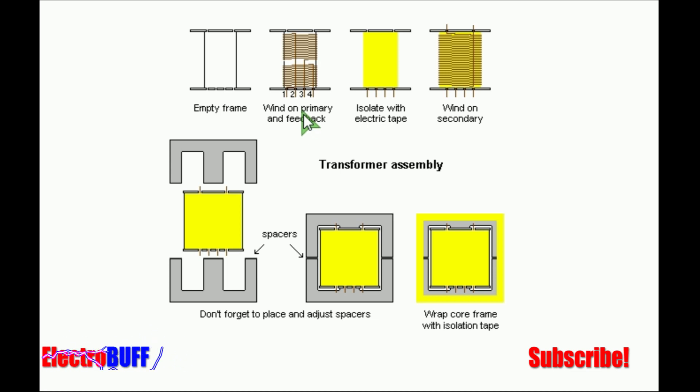Then you add like 5 layers of isolation with good electric tape and make the secondary winding. As I had mentioned, the turns will be depending on the voltage you want. For beginners, you can use 20 turns or go all the way to 200 turns.